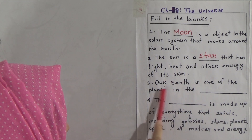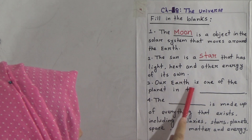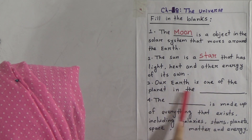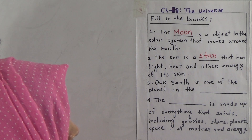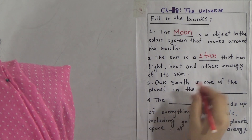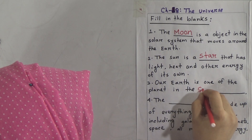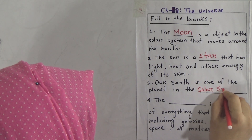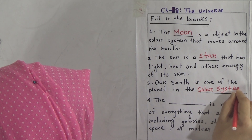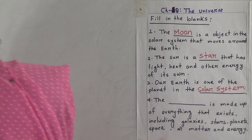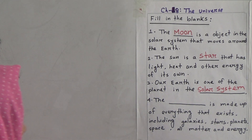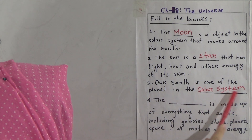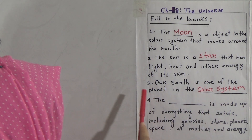Number three: our earth is one of the planets in the blank. Dear students, the answer will be: our earth is one of the planets in the solar system. So write 'solar system' for number three. Our earth is one of the planets in the solar system.